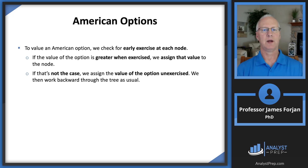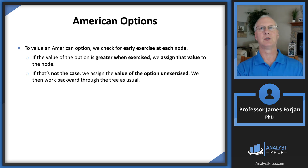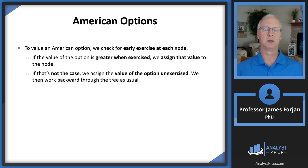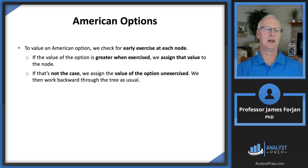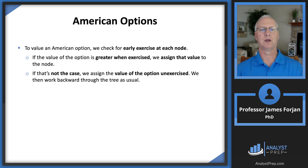To value American options, we check for early exercise at each node. With an American option, you can exercise at almost any time, though you usually won't because you'd give up the time value. If the value of the option is greater when exercised early, we assign that value to the node; otherwise, we use the unexercised option value. You work your way back through the tree the same way.